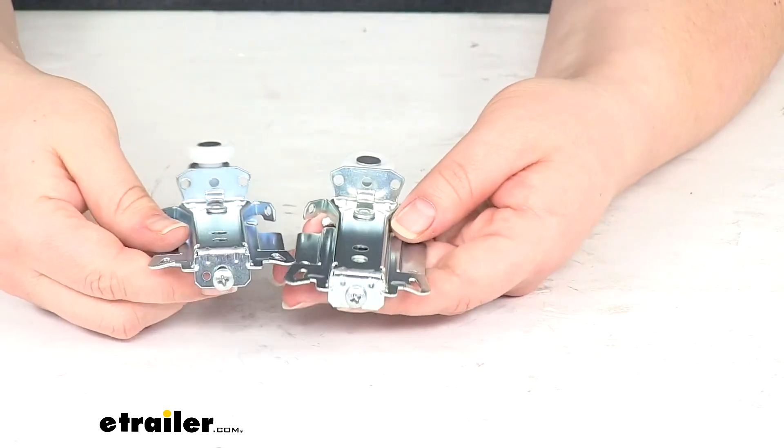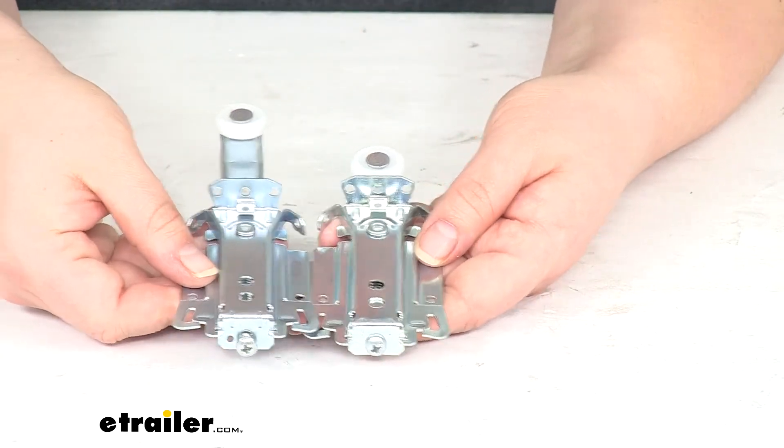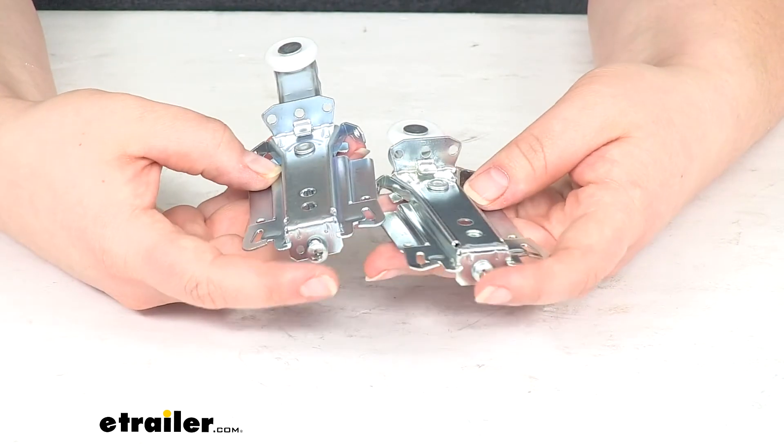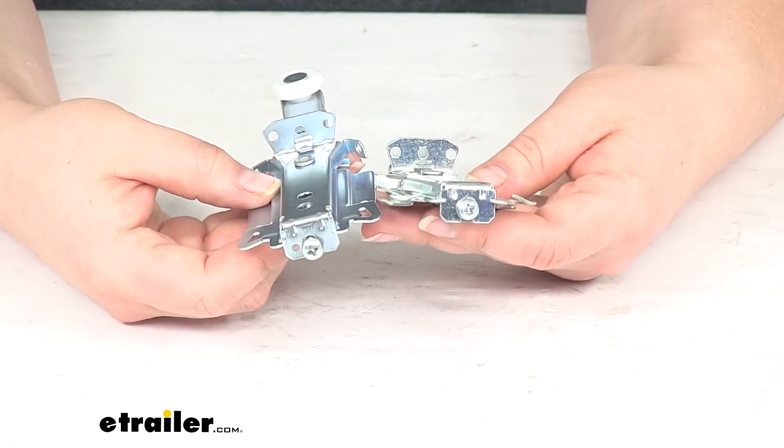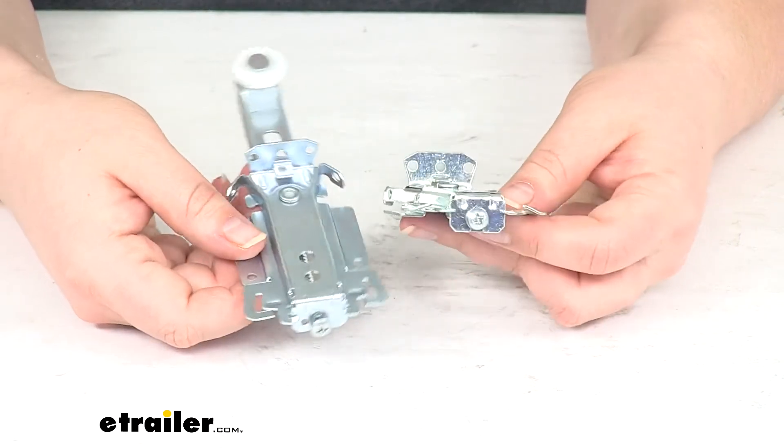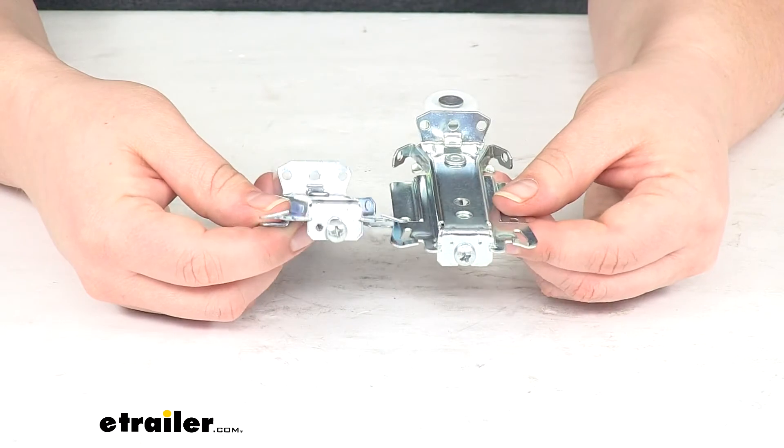So that's how much variance you can get between those. And you can really dial it in where you need it to be, just have to use that little screw at the bottom there. A Phillips head screwdriver will do you just fine to get that adjustment made.